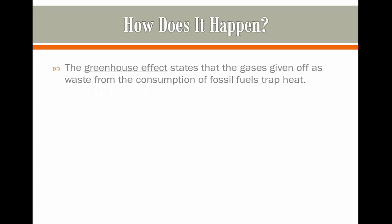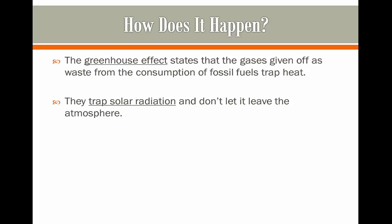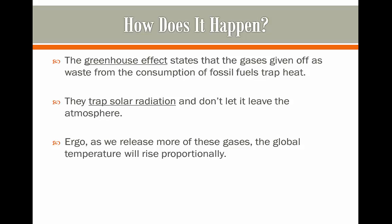So how does it happen? The greenhouse effect states that the gases given off from waste from the consumption of fossil fuels are going to trap heat. They trap solar radiation and they don't let it leave the atmosphere. As a result, we release more of these gases into the global atmosphere, and the global temperature will be rising proportionally.